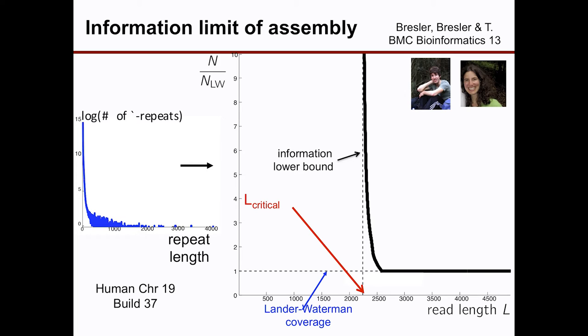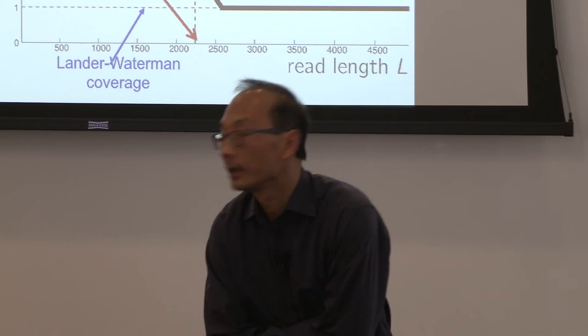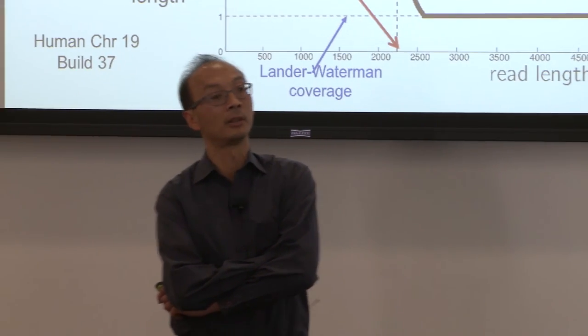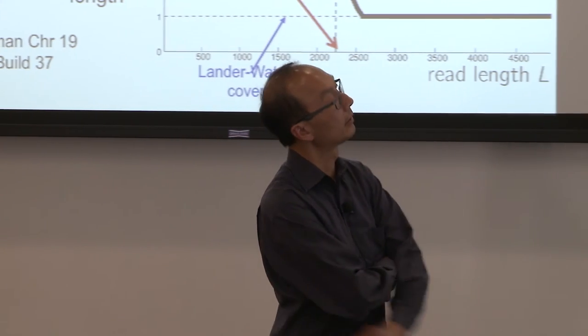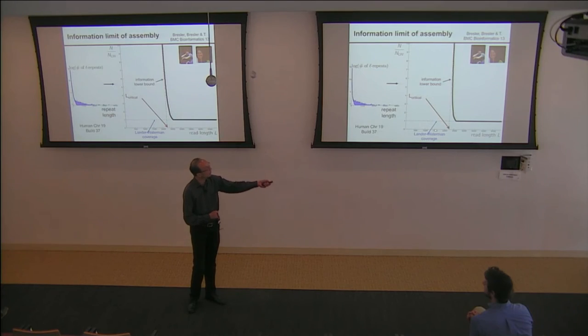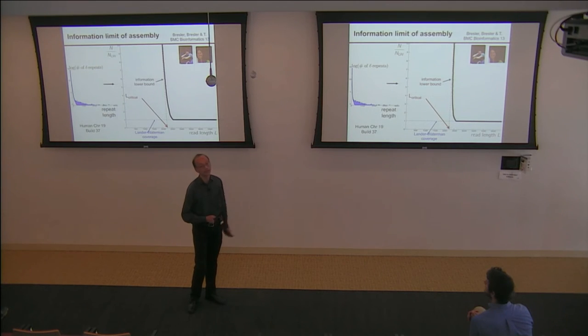Quiz time: what is L_critical for a given genome? L_critical is the longest repeat — specifically the maximum of the longest triple repeat and the longest interleaved repeat. That's what determines this vertical line, after which the curve drops very sharply, mainly driven by bridging of the longest repeats.